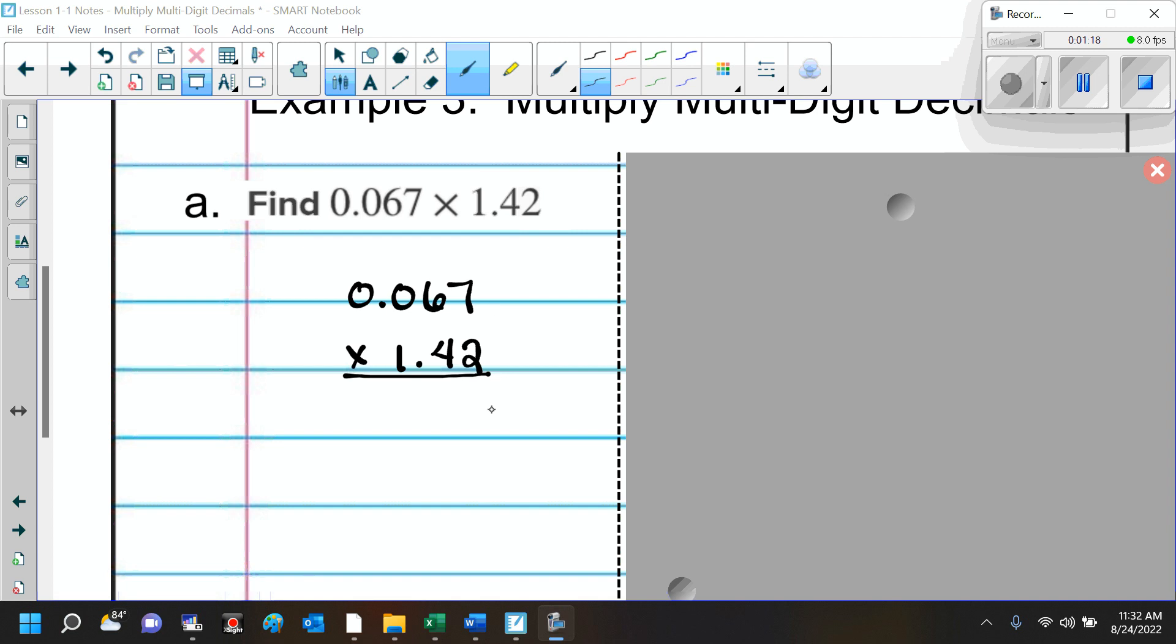Here, we've got 7 times 2 is 14. Carry the 1. And then 6 times 2 is 12. Plus 1, that's 13. Carry the 1. And then 2 times 0 is 0. Plus 1, 1. And then, we want to put our placeholder there.